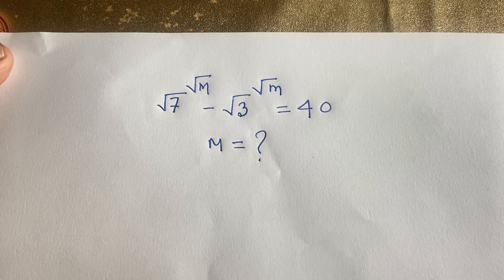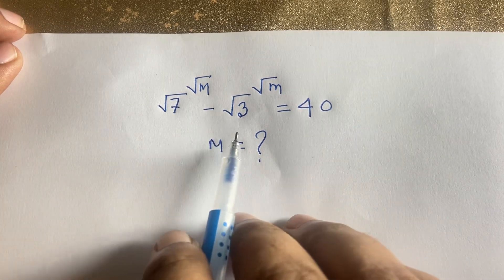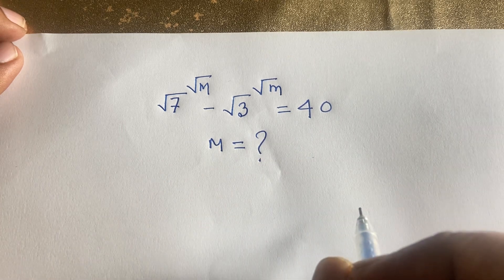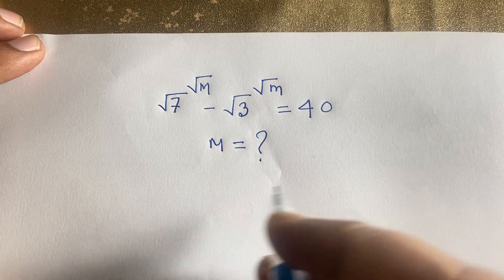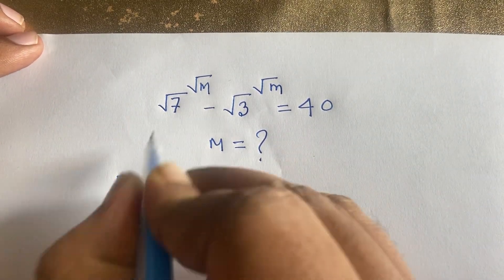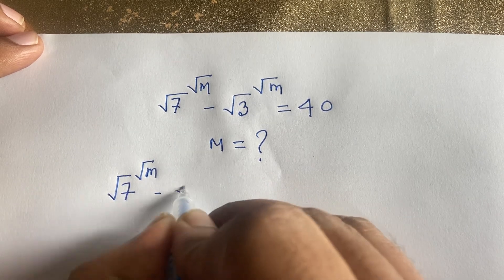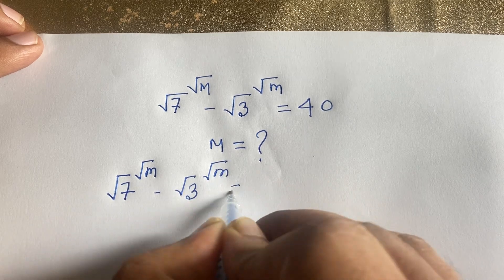Hello everyone. How to solve this interesting exponential equation — it is a Math Olympiad question. The equation is: square root of 7 to the power square root of m, minus square root of 3 to the power square root of m, is equal to 40. We need to find m.